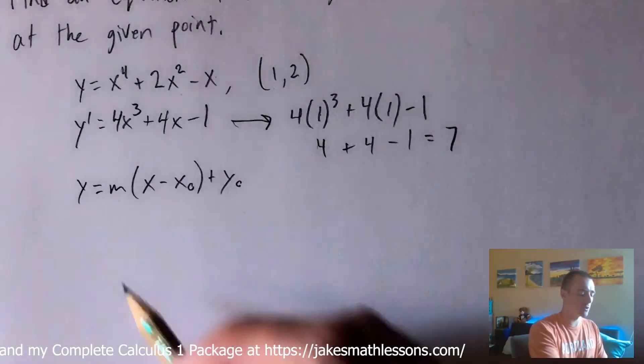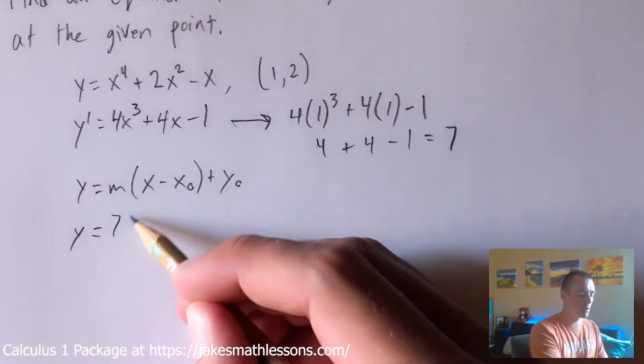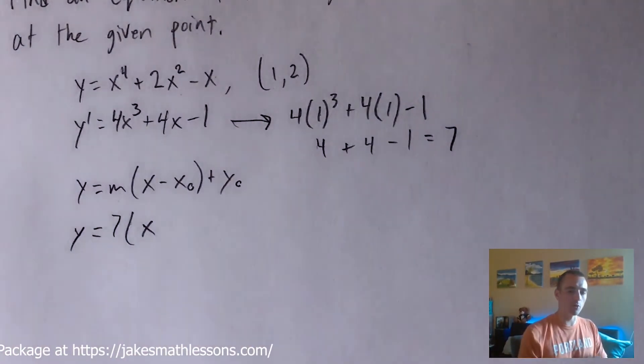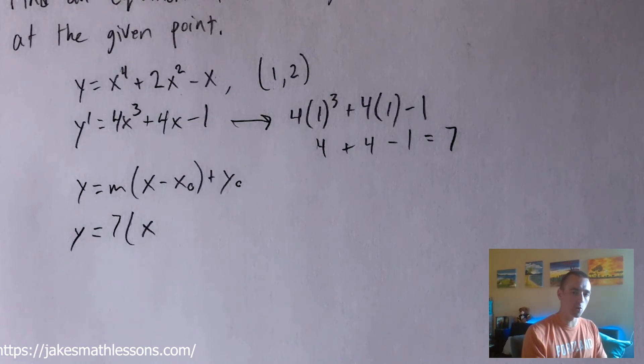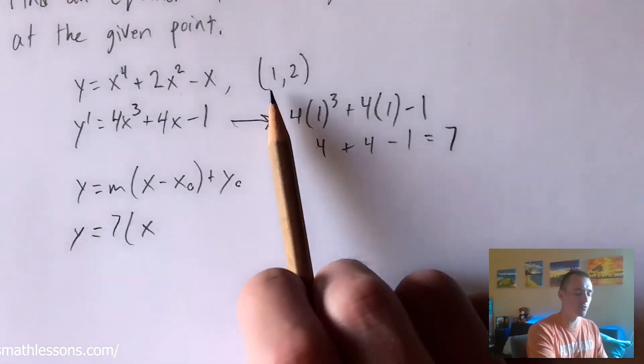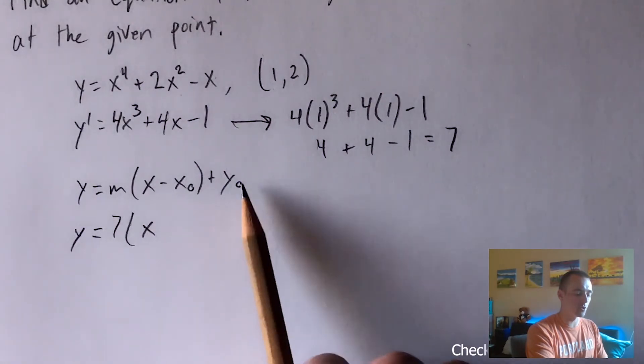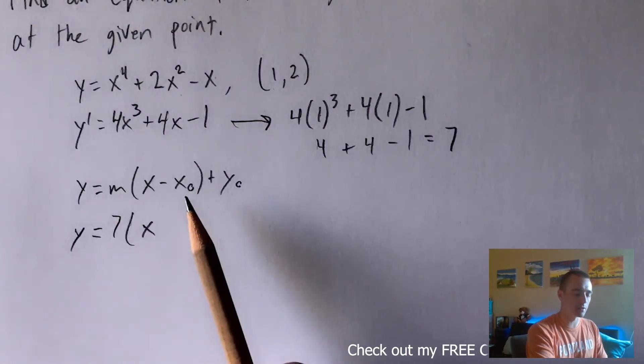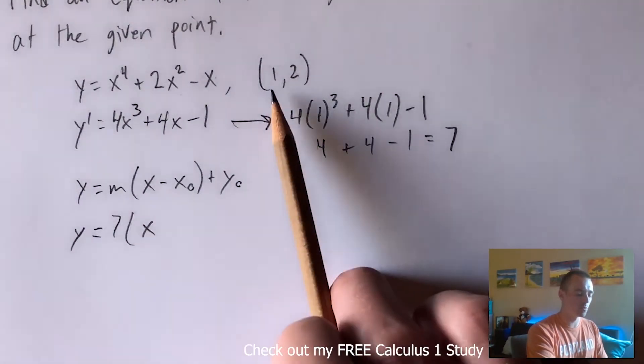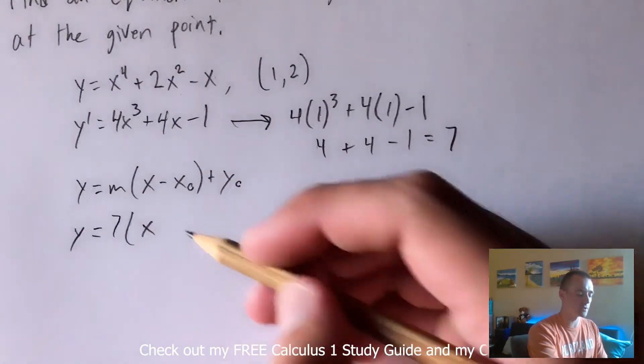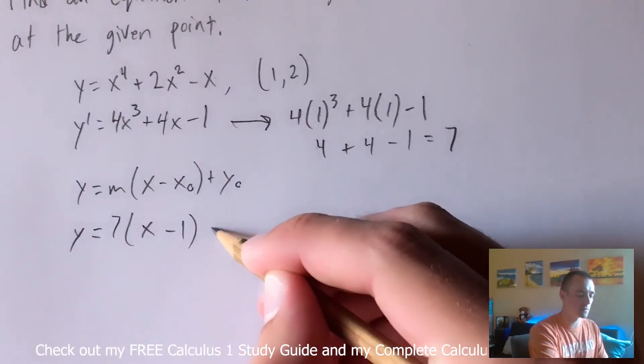So what we can do is go ahead and put 7 in for m and then like I said before we also know that it has to share this point in common. We know that it has to go through the point 1, 2. So since x zero, y zero is some point that lies on this line we can just use 1 for x zero and 2 for y zero in this tangent line equation.